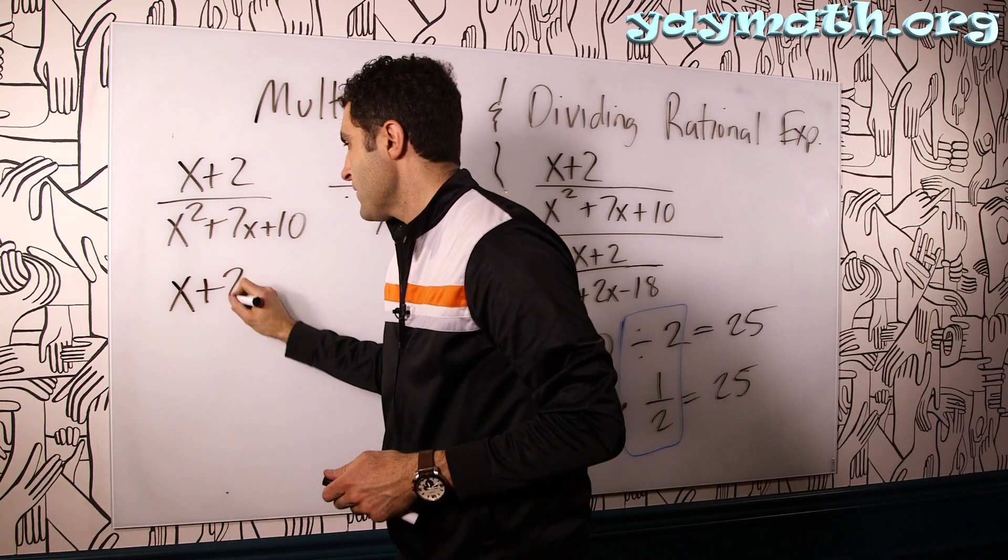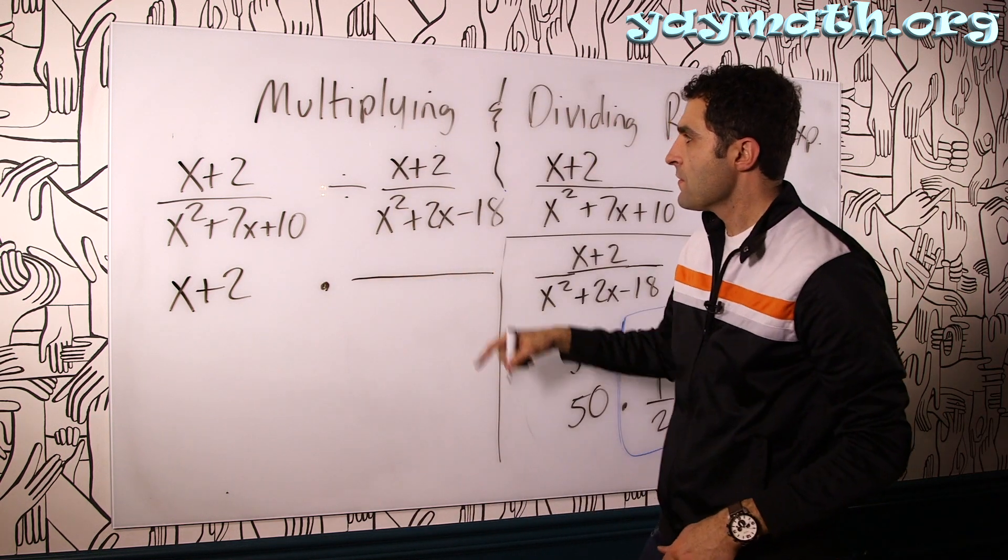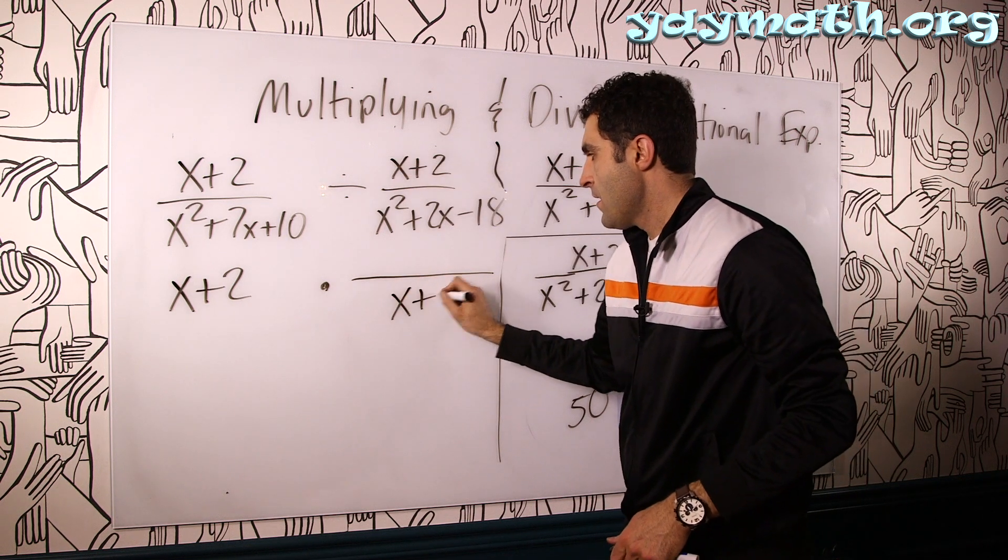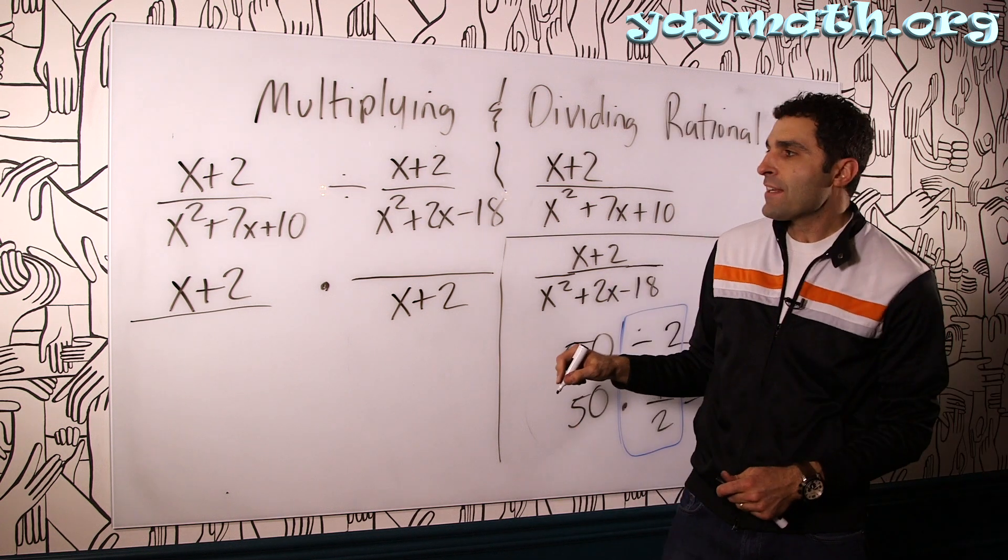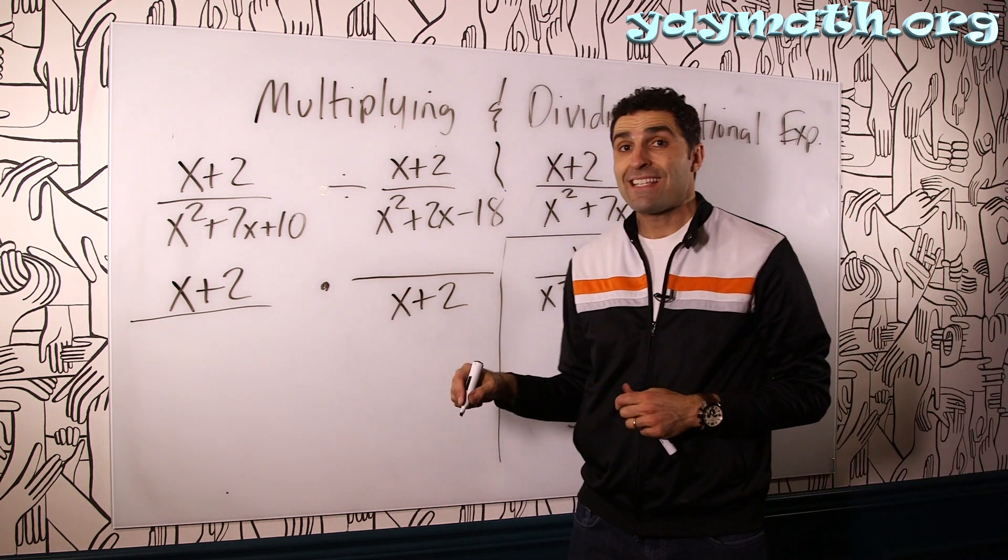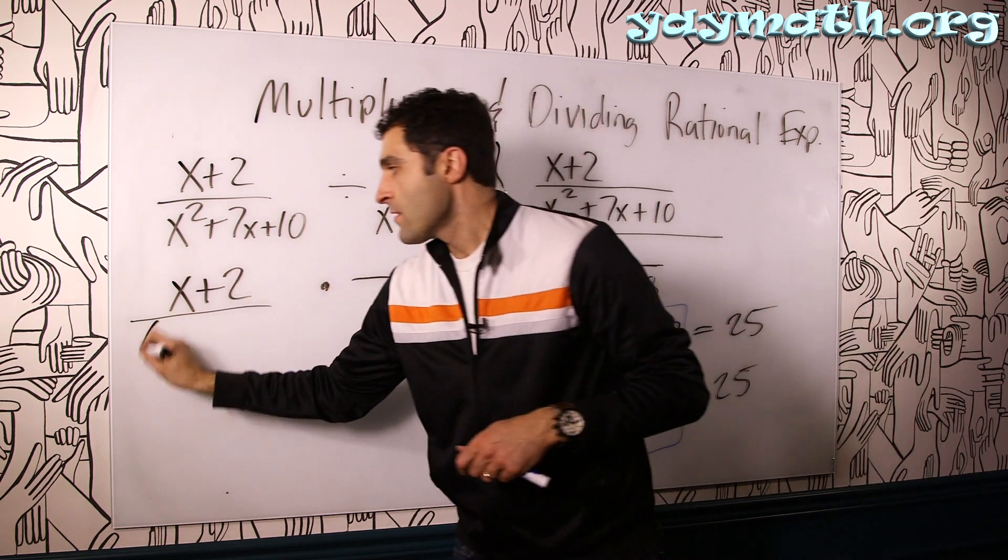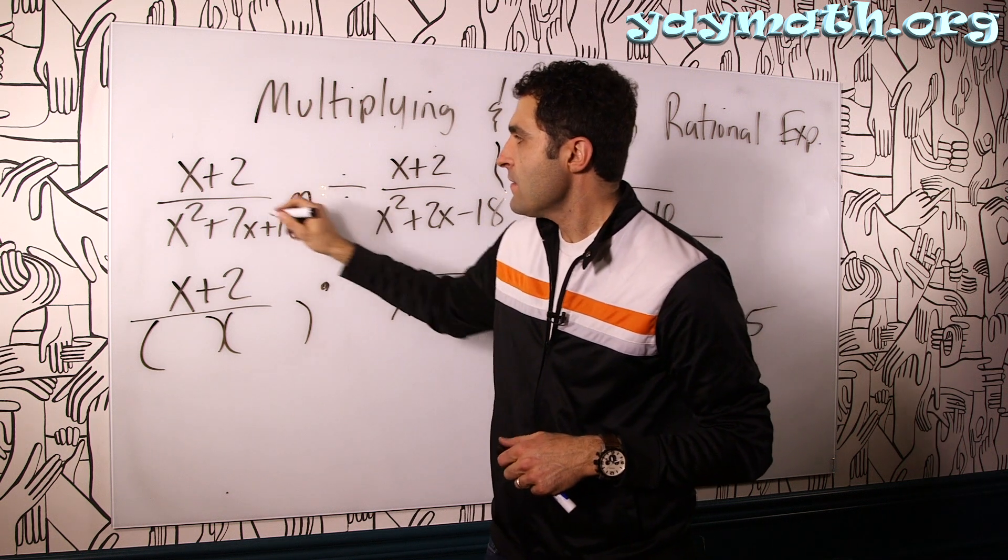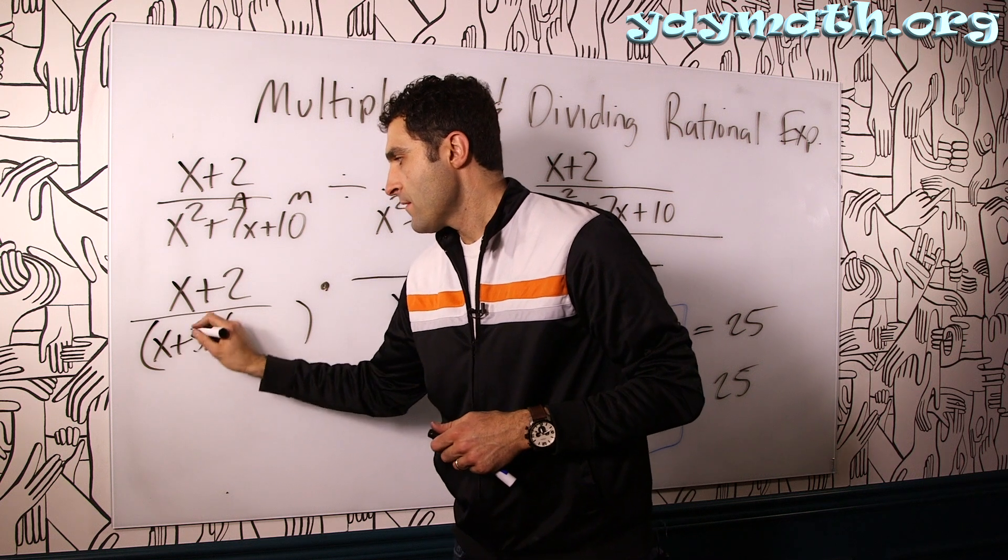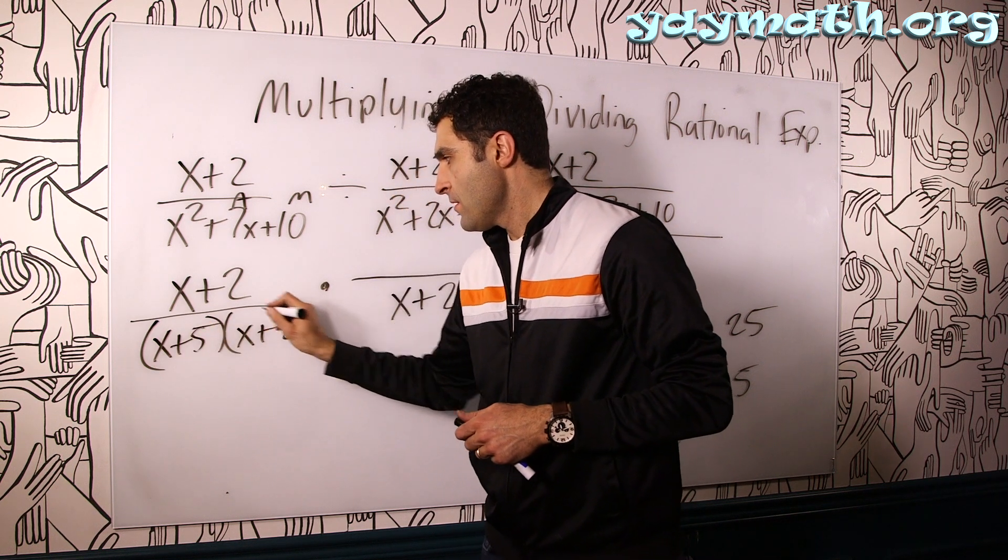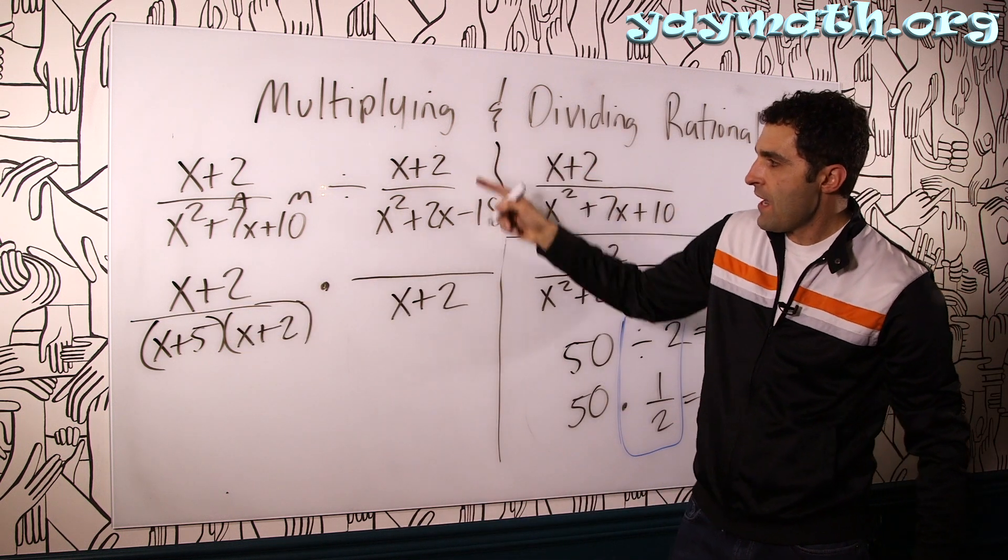So we're going to apply that rule here. Here we have the first, and we're going to go times, and we're going to flip this fraction over. So then this becomes X plus 2 on the bottom. Now, I didn't write the rest because now we have to factor. The reason we're going to factor is we want to start doing some cancellations. So X squared plus 7X plus 10 factors. Numbers that multiply to 10 and add to 7 are 5 and 2. X plus 5, X plus 2. We can cancel these.